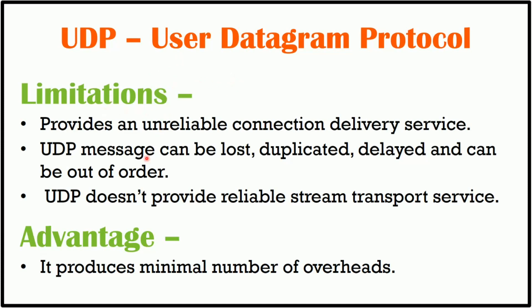UDP provides an unreliable connectionless delivery service. It does not add anything to the services of IP except for providing process-to-process communication instead of host-to-host communication. UDP messages can be lost, duplicated, delayed, and can be out of order. UDP doesn't provide reliable stream transport service. There is no flow control mechanism and there is no acknowledgement for received packets. However, it does provide error control to some extent.